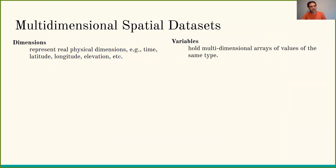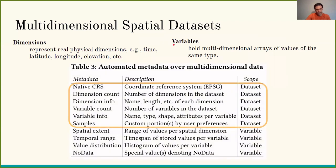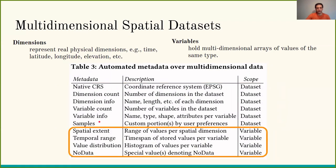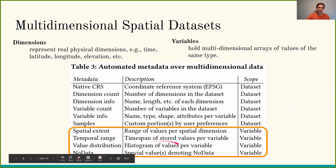For multidimensional spatial datasets, multidimensional datasets have dimensions which represent real physical dimensions such as spatial coordinates or time, or more model-specific dimensions, and also have variables which hold multidimensional arrays of values of the same type depending on the dimensions. Here we have metadata describing the whole dataset, such as the native coordinate reference system, the dimension information, and variable-related metadata such as spatial and temporal extent, value distribution, and the nominal data value for the variables.